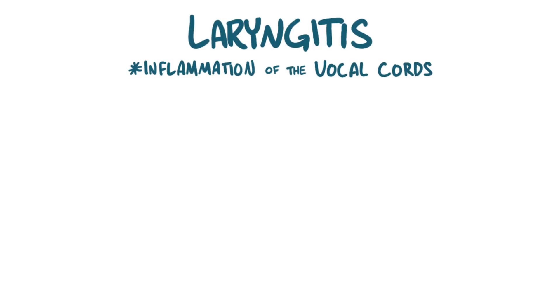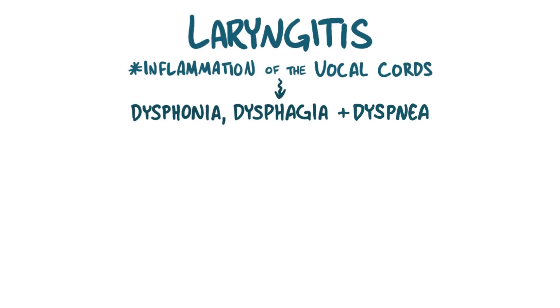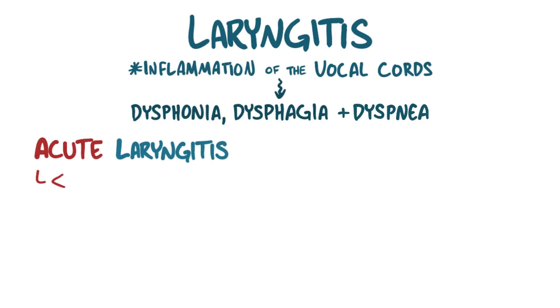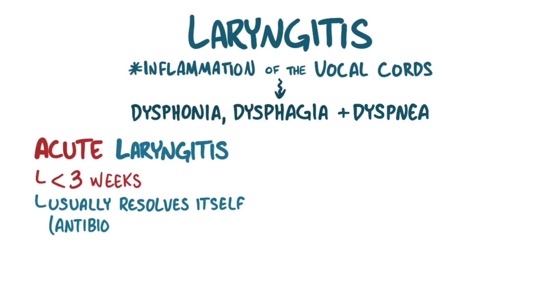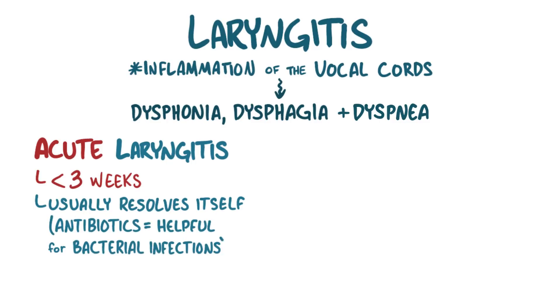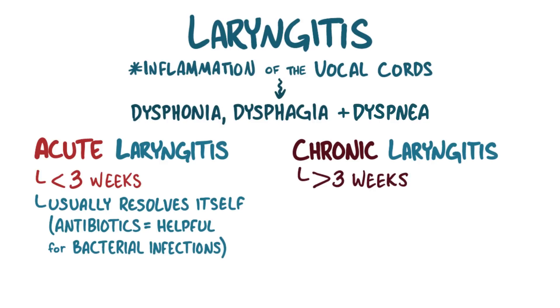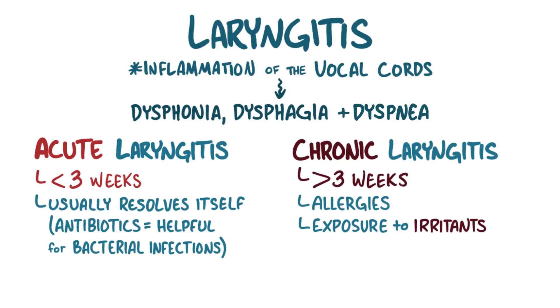As a quick recap: laryngitis is inflammation of the vocal cords and causes dysphonia, dysphagia, and dyspnea. Acute laryngitis usually lasts less than three weeks and resolves on its own, although antibiotics are helpful for bacterial laryngitis. Chronic laryngitis lasts more than three weeks and is usually caused by allergies, exposure to irritating agents, or gastroesophageal reflux.